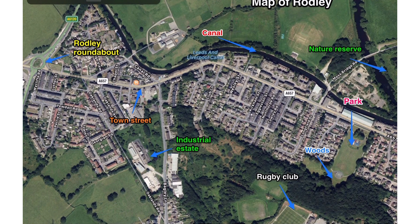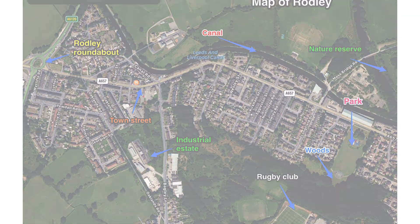This could be useful in geography perhaps when doing map work, but you could also use a screenshot of just about anything that you want to annotate. It could be a picture of your back garden, for example, if you want to grow some fruits and vegetables and where to put them. You can also see that I've included a title at the top right — in this case it's a map of Rodley — and I've used colours to make it stand out a little bit more. The arrows I've kept the same colour and it just looks quite neat and tidy with those different colours.